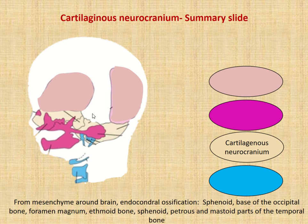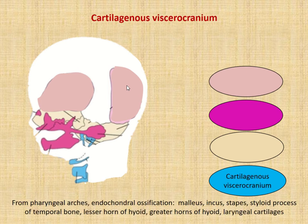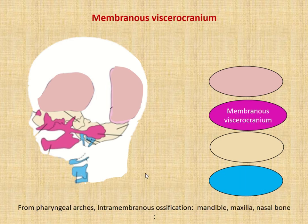Here is a summary slide. The neurocranium bones are in this region — the beige area at the base of the cranium is the cartilaginous neurocranium, listed here. The membranous neurocranium, not going through cartilaginous precursors, is on the sides and top, highlighted in mauve. The cartilaginous viscerocranium is located here, which you're learning about through the pharyngeal arches, and the membranous viscerocranium is depicted here in pink.